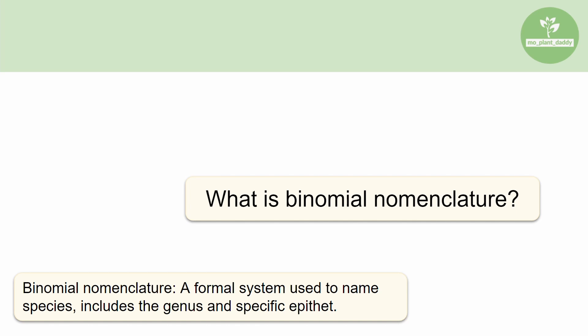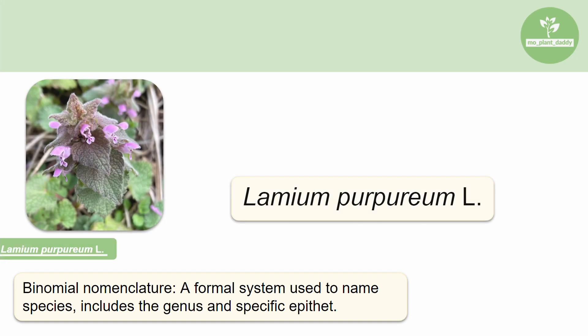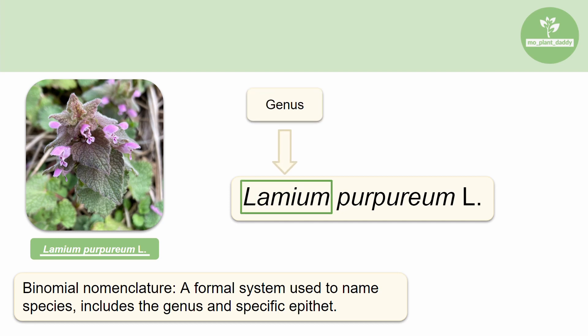You might be wondering: how do I distinguish between the genus and specific epithet in binomial nomenclature? Let me show you an example with Lamium purpureum L, otherwise known as dead nettle, which is a super common lawn weed. The first part of the Latin binomial will be what genus the species is a member of — in this case, it is Lamium.